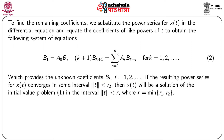If the resulting power series for x(t) converges in some interval |t| < r₂, then x(t) will be a solution of the initial value problem (1) in the interval |t| < r, where r = min(r₁, r₂).